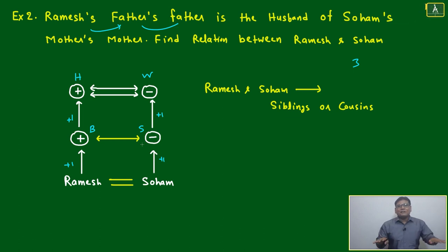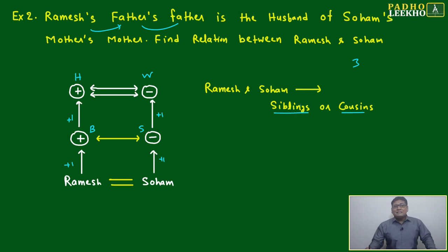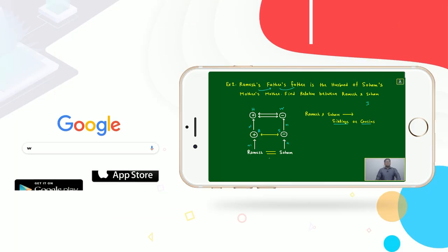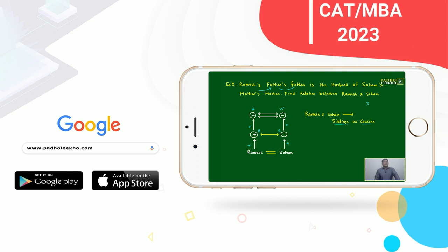But once they are producing kids of their own, those kids will not be brother-sister — they will be siblings or cousins. So Ramesh and Soham will be cousins. Just suppose this brother and sister — his son is Ramesh and she has Soham — both will be cousins.